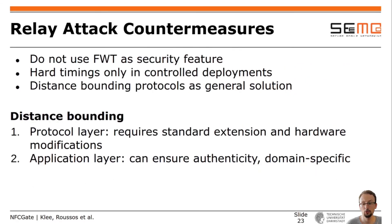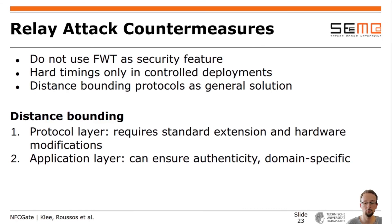Summarizing these results: do not use the FWT as a countermeasure. Hard timings are only possible in deployments with full control over tags and readers. A general countermeasure against relay attacks is distance-bounding protocols. Implementation is possible on two layers: the protocol layer requires extensions to the NFC standards and new hardware, whereas an implementation on the application layer could additionally ensure authenticity but is application-specific, so every system must ship its own possibly incompatible distance-bounding protocol.